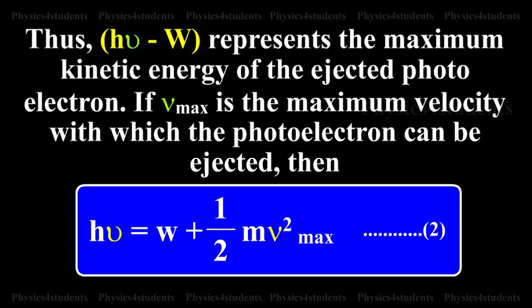Thus, H nu minus W represents the maximum kinetic energy of the ejected photoelectron. If V max is the maximum velocity with which the photoelectron can be ejected, then H nu is equal to W plus half Mv square max. This is equation number 2.